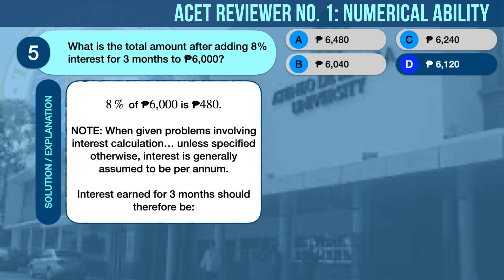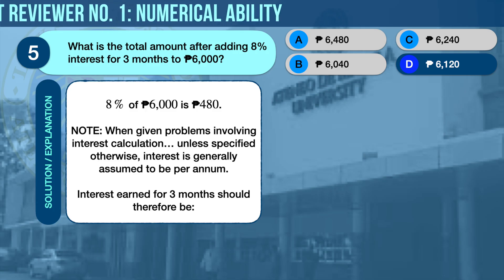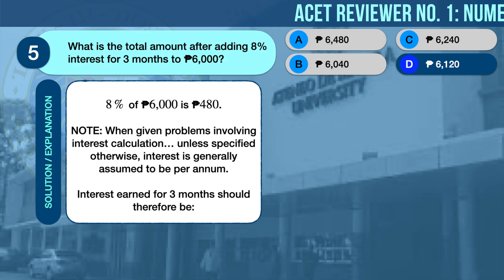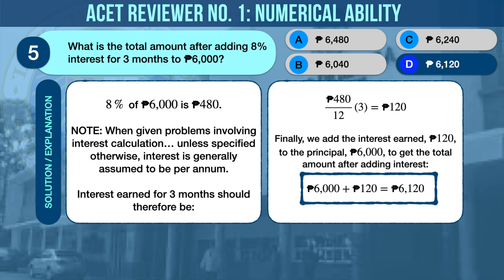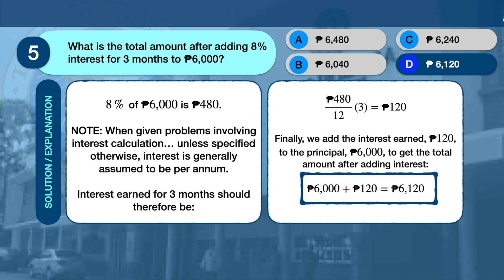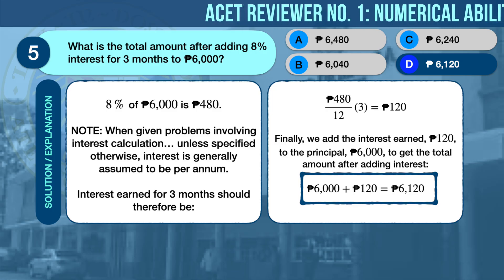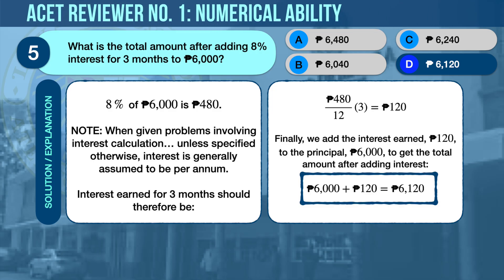The correct answer is D, 6,120 pesos. 8 percent of 6,000 is 480. When given problems involving interest calculation, take note that unless specified otherwise, interest is generally assumed to be per annum. Interest earned for three months should therefore be 480 pesos divided by 12 months, then multiplied by 3 months, which gives 120 pesos. Finally, we add the interest earned, 120 pesos, to the principal amount, 6,000 pesos, to get the total amount of 6,120 pesos.